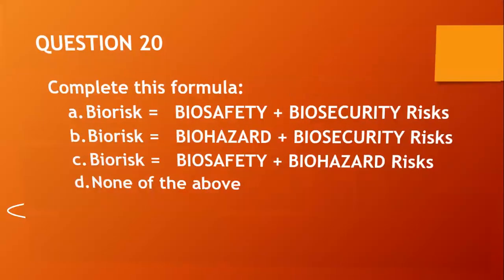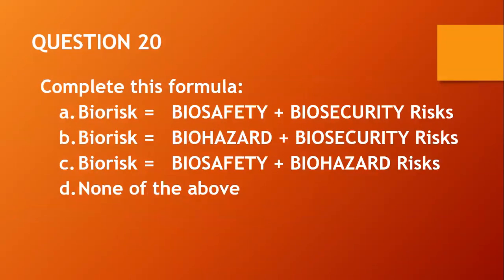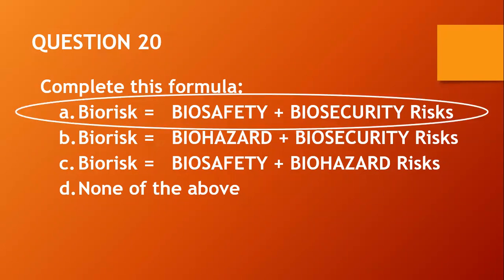Question twenty: Complete this formula — biorisk equals what? A, biosafety and biosecurity risk; B, biohazard and biosecurity risk; C, another option; D, none of the above. Looks like a tough one, but looking carefully, I would go with A: biorisk equals biosafety and biosecurity risk.